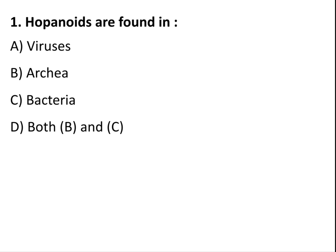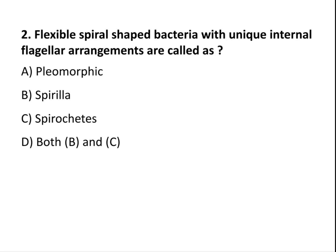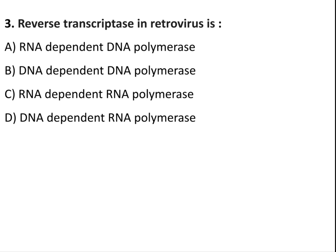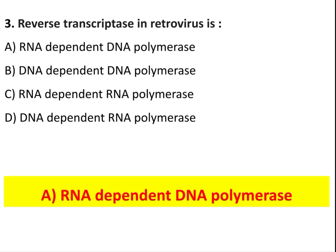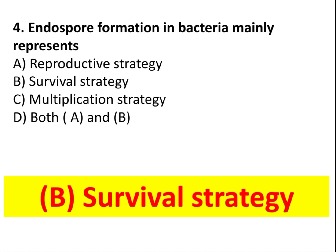Hopanoids are found in bacteria. Flexible spiral-shaped bacteria with unique internal flagellar arrangements are called spirochetes. Reverse transcriptase in retrovirus is RNA-dependent DNA polymerase. Endospore formation in bacteria mainly represents a survival strategy.